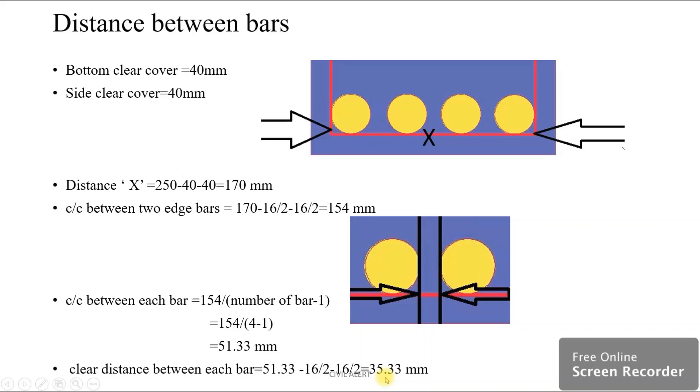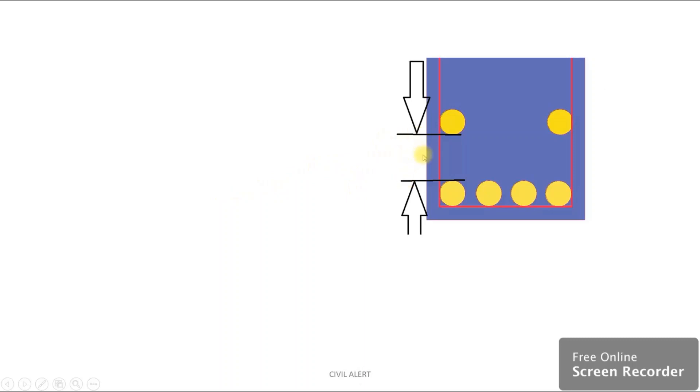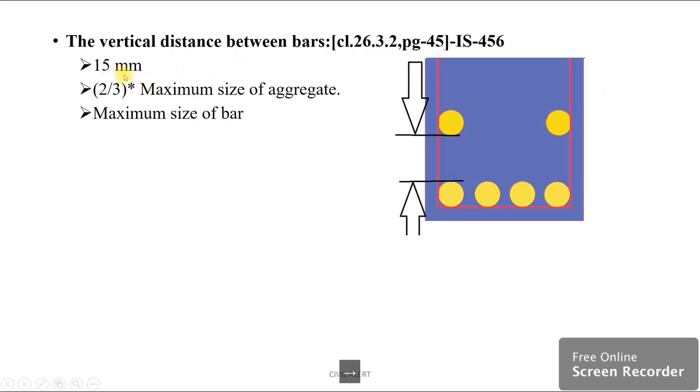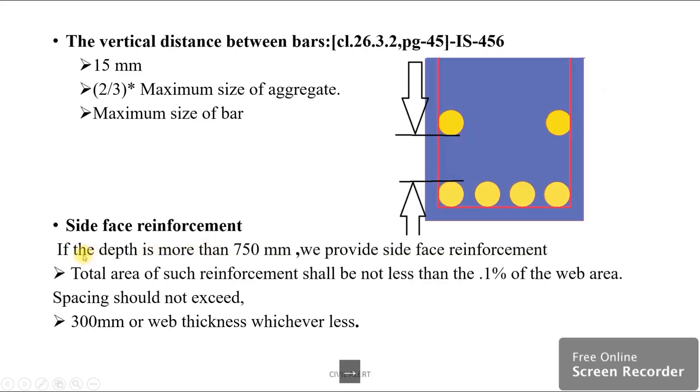The clear distance between each bar equals 51.33 minus 60/2 minus 60/2, which equals 35.33 mm. Next, vertical distance between bars: as per IS 456, clause 26.3.2, page 45, the vertical distance between bars should be 50 mm or 2/3 of maximum size of aggregate or the maximum size of bar. We will take the greater value. Side face reinforcement will be studied in the next class.